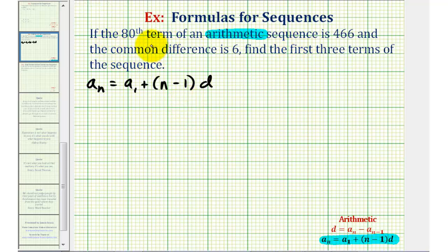If we know the 80th term of the arithmetic sequence is 466, that means a sub 80 must equal 466, and our common difference is six, so we have d equals six. We can use this information to perform substitution in our arithmetic formula.